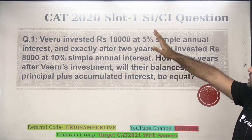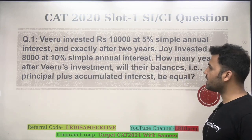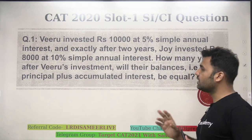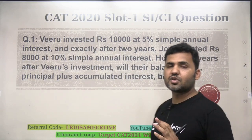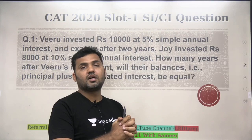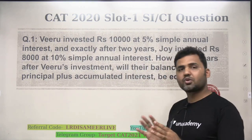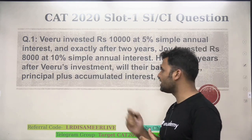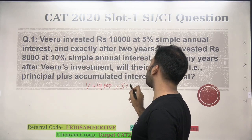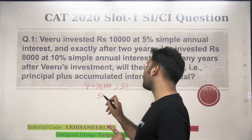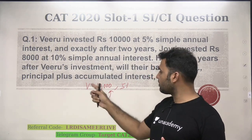CAT 2020 Slot 1 — a Simple Interest question. The question says: Viru invested 10,000 rupees at 5% simple interest, and exactly after two years, Joy invested 8,000 rupees at 10% simple annual interest. How many years after Viru's investment will their balances — that means principal plus accumulated interest — be equal? A basic question of simple interest. You just need to know the basic definition of simple interest, which you studied in seventh or eighth standard.